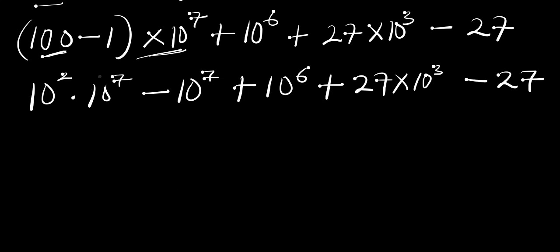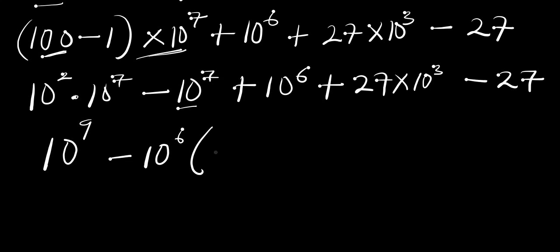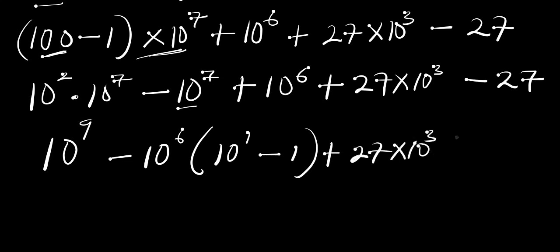We can add the exponents because the bases are the same and we have a multiplication sign. So we get 10⁹, then minus 10⁷, and for the 10⁶ we can factor out 10⁶ to have minus 10⁶ times (10¹ minus 1), plus 27 times 10³, then minus 27.